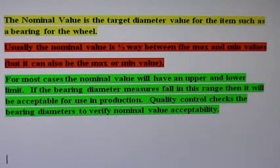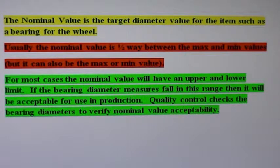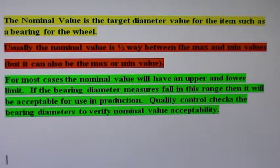The nominal value is defined as the target diameter value for an item such as a bearing for a wheel. Usually the nominal value is halfway between the maximum and minimum values. However, it can also be the maximum or minimum value. For most cases, the nominal value will have an upper and lower limit. If the bearing diameter measures fall in this range, then it will be acceptable for use in production. Quality control checks the bearing diameters to verify the nominal value acceptability.